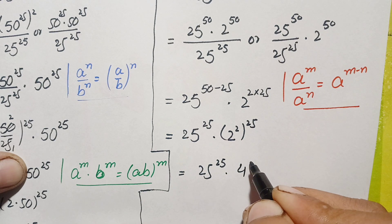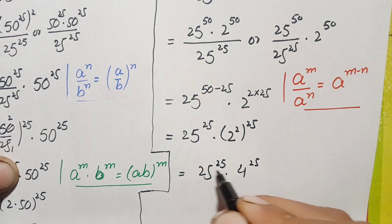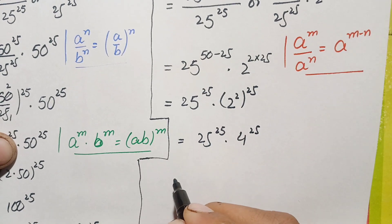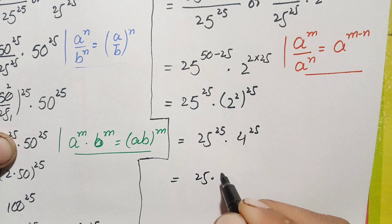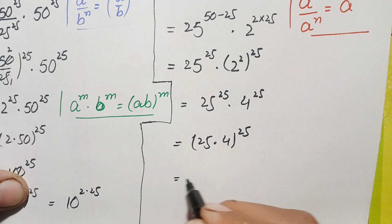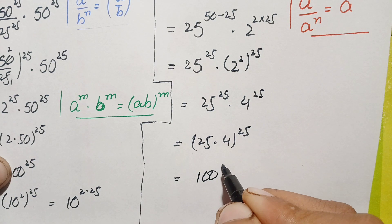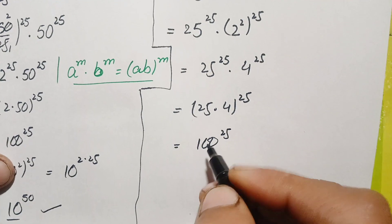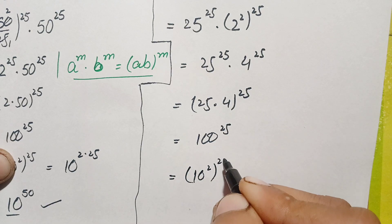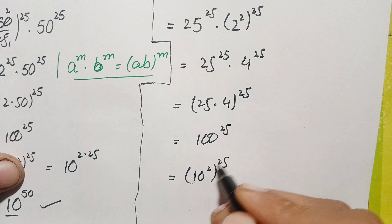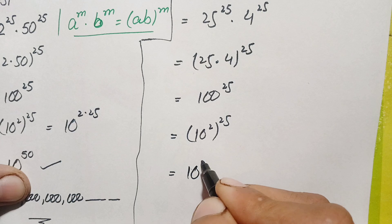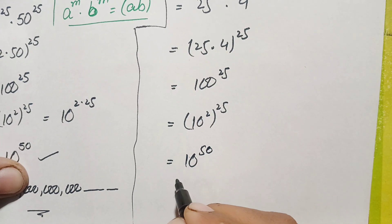Now both numbers have the same power, so we use the same-power identity and multiply the bases: 25 times 4 equals 100. This becomes 100 raised to power 25. Writing 100 as 10 squared, we get 10 squared, whole raised to power 25. Multiplying the powers gives 10 raised to power 2 times 25, which is 10 raised to power 50.